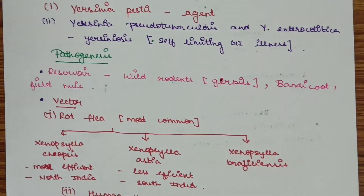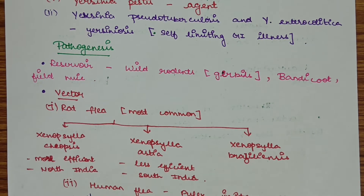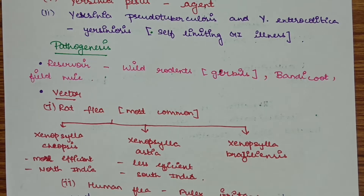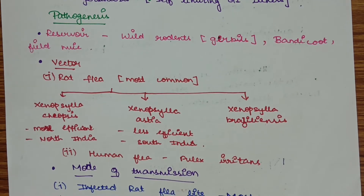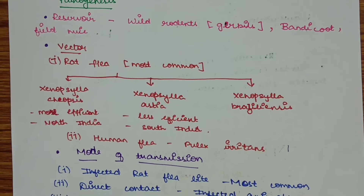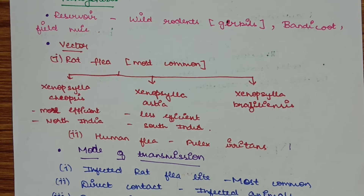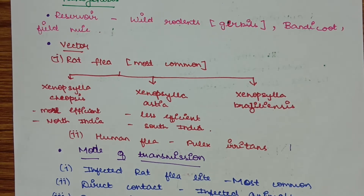Pathogenesis of plague. The reservoir of plague includes wild rodents, gerbils, bandicoot, or field mice. The vector of plague is rat flea, which is Xenopsylla, the most common vector. Xenopsylla has three species: Xenopsylla cheopis, Xenopsylla astia, and Xenopsylla brasiliensis. Xenopsylla cheopis is the most efficient vector and is found in North India.